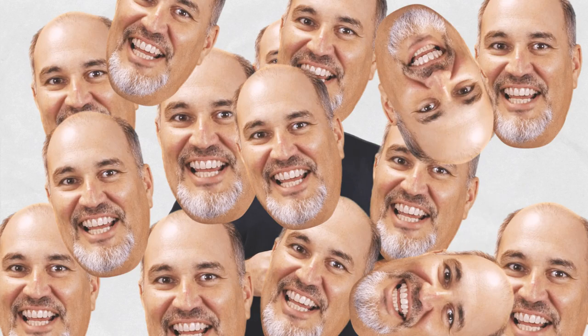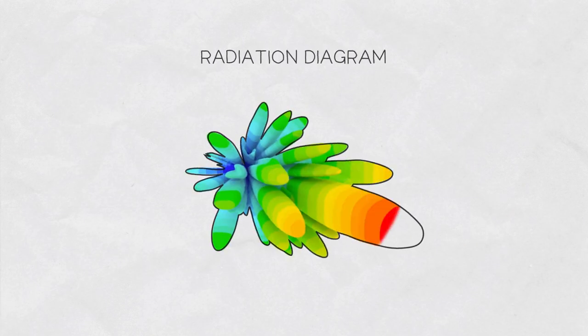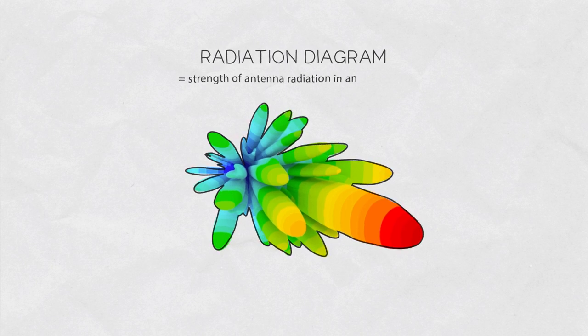Hey everybody, it's Tostos with RF Elements, and today we're going to talk about my favorite subject: side lobes. The radiation diagram of an antenna tells us how strongly it radiates in any given direction.